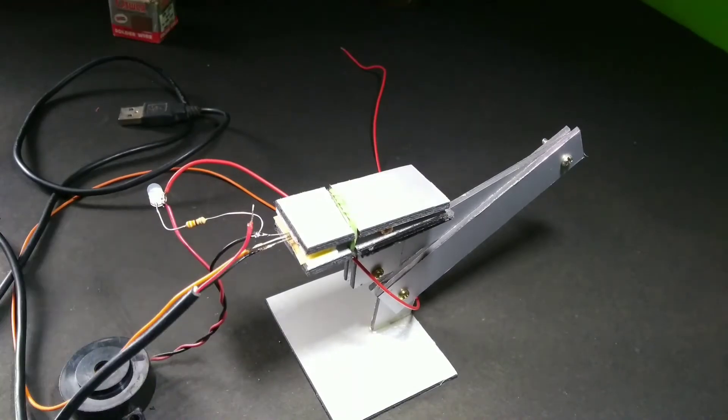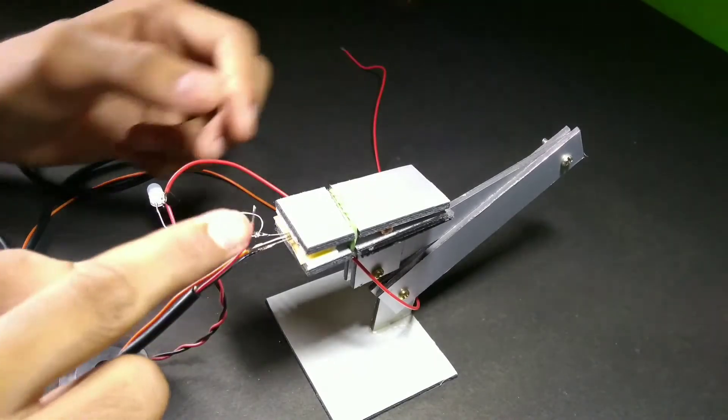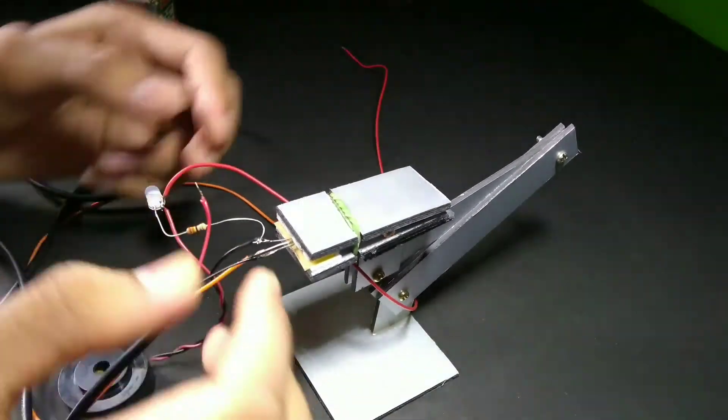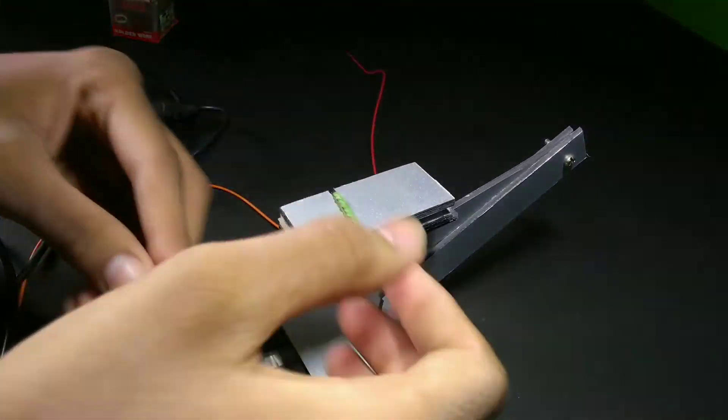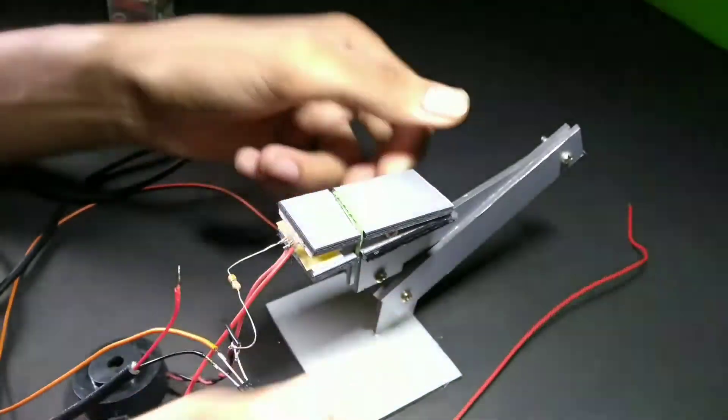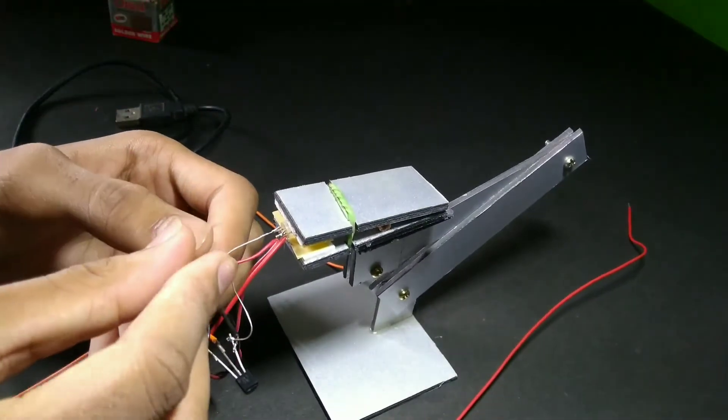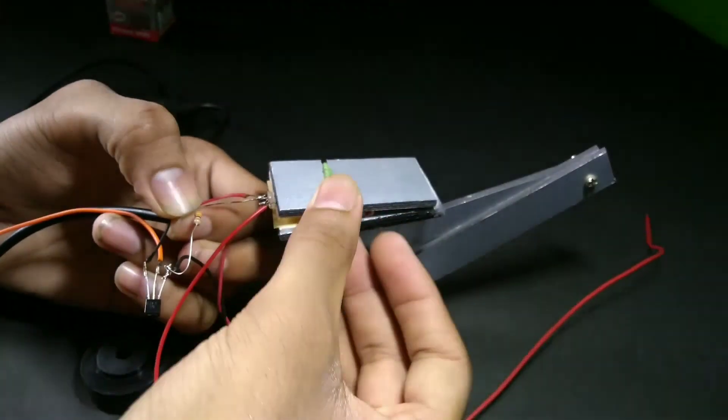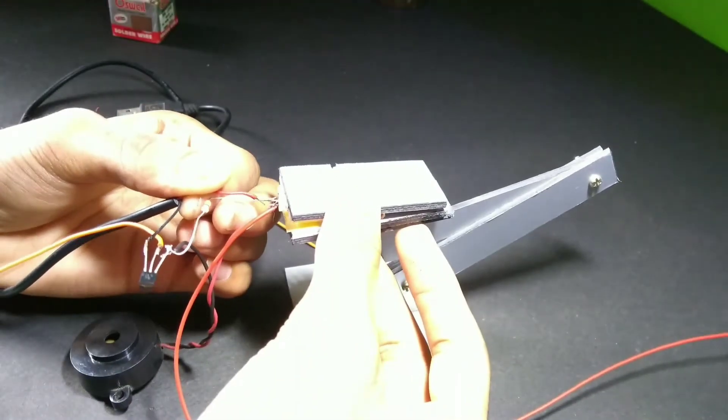After soldering it, the red wire in the USB cord is remaining. So we solder this red wire to the positive terminal of the LED where we also attached our buzzer's red wire and sensor wire.